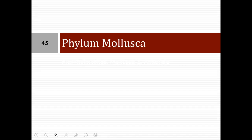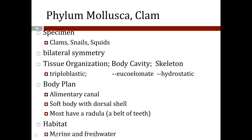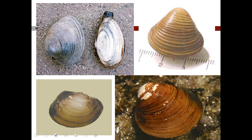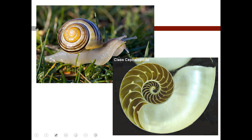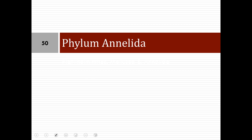Next is Phylum Mollusca. Examples are numerous: squids, snails, clams, nautilus, and more. They exhibit bilateral symmetry and are triploblastic coelomates with a hydrostatic skeleton. They exhibit two openings — mouth and anus — giving them a complete digestive system. They have a soft body with a dorsal shell that is secreted. Most have a radula, a belt of teeth. They live on land and in marine and freshwater environments. Photos show bivalvia, cephalopods, and gastropods.